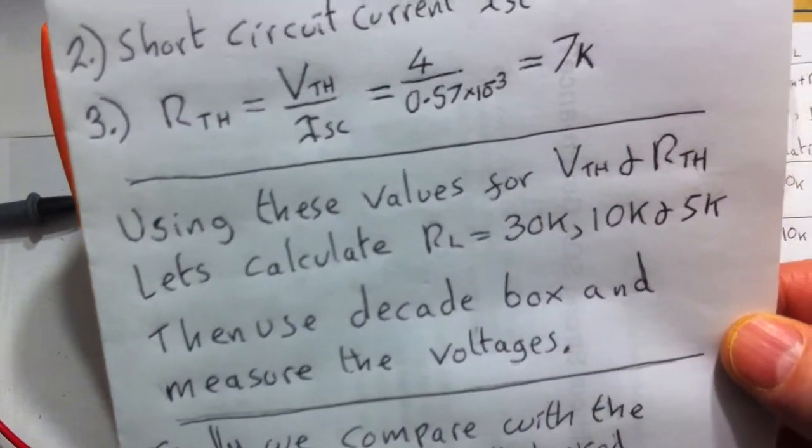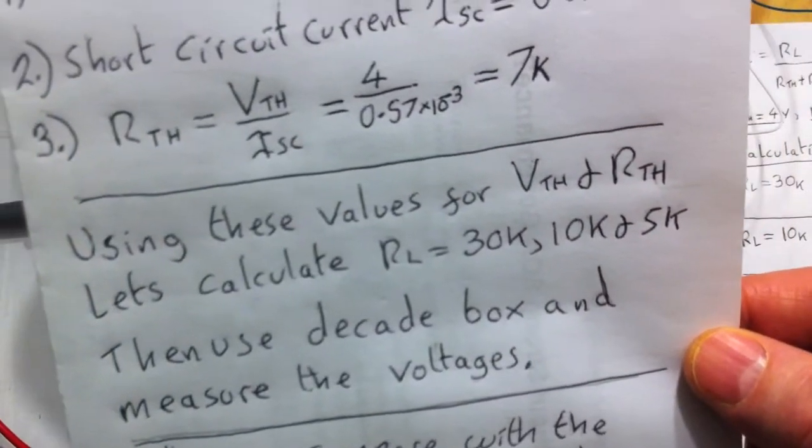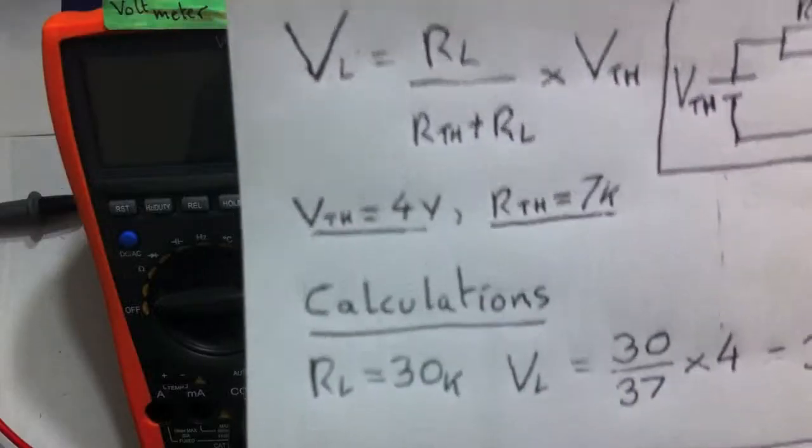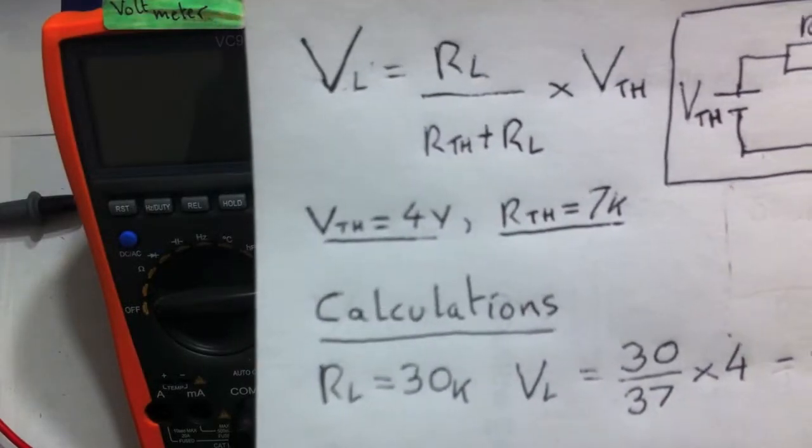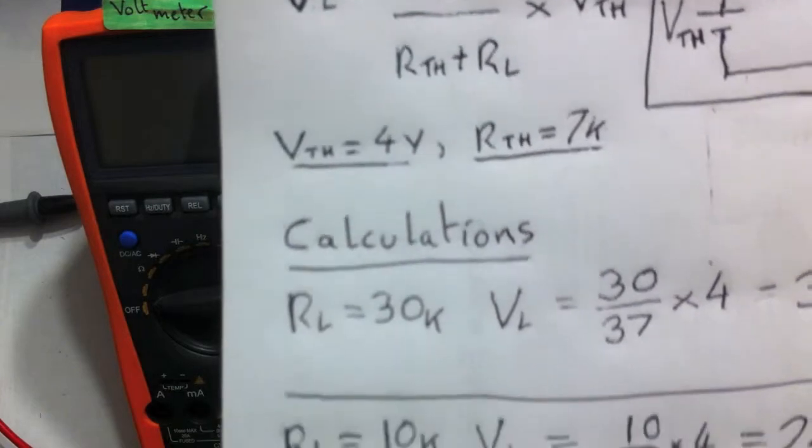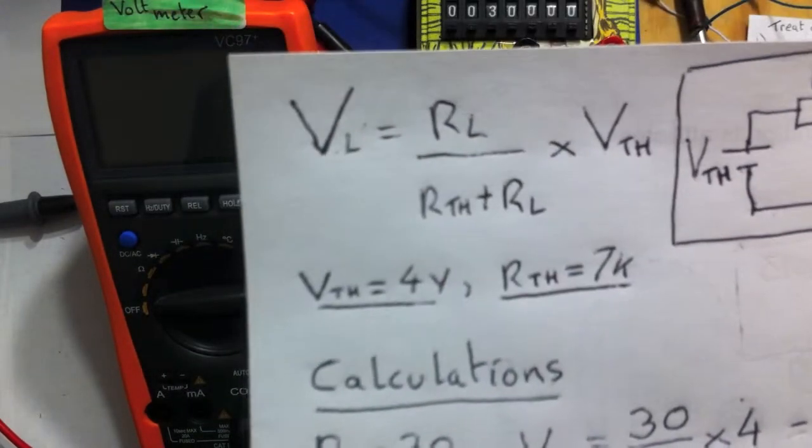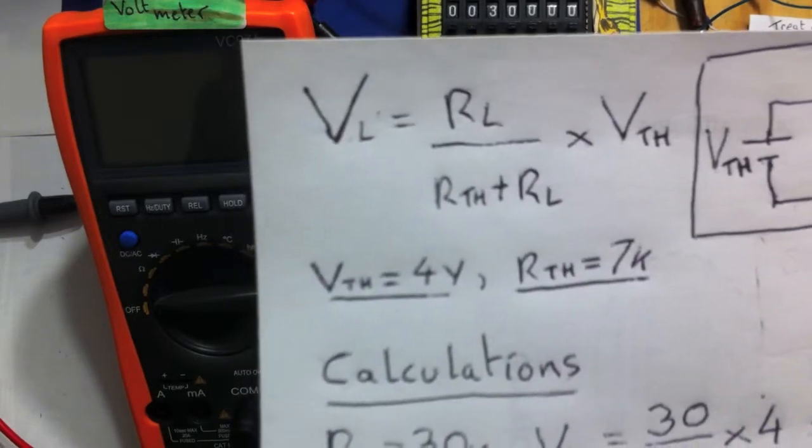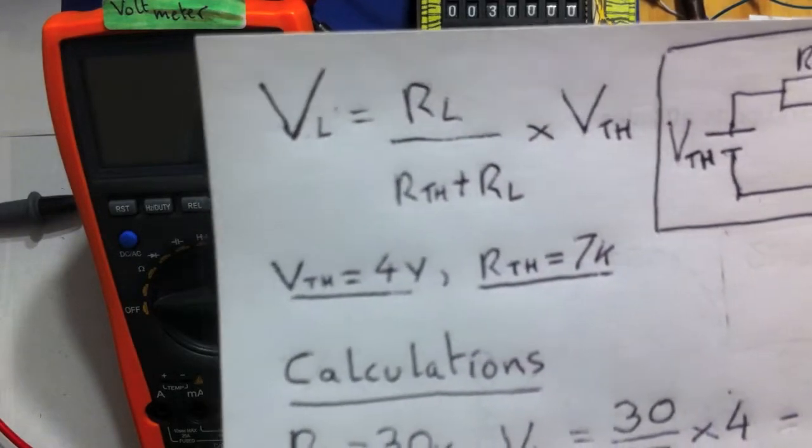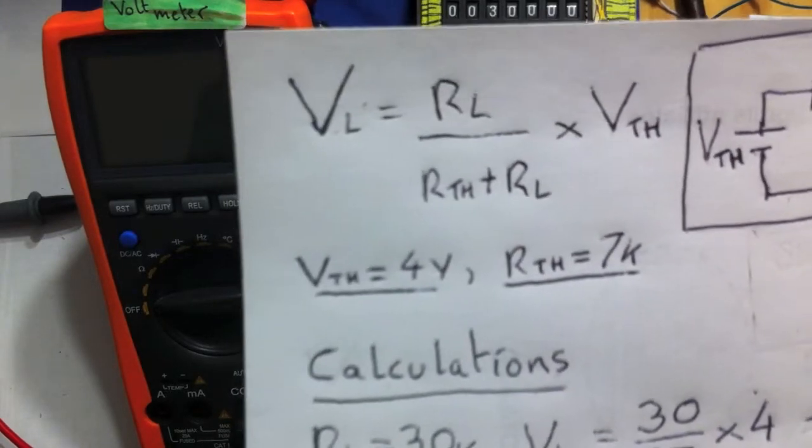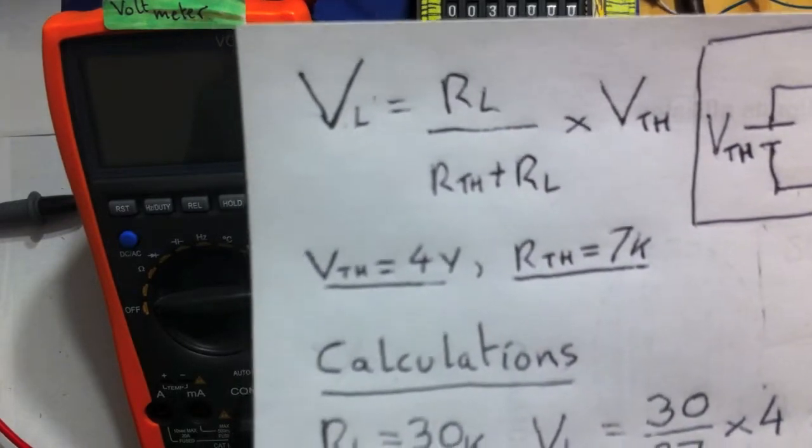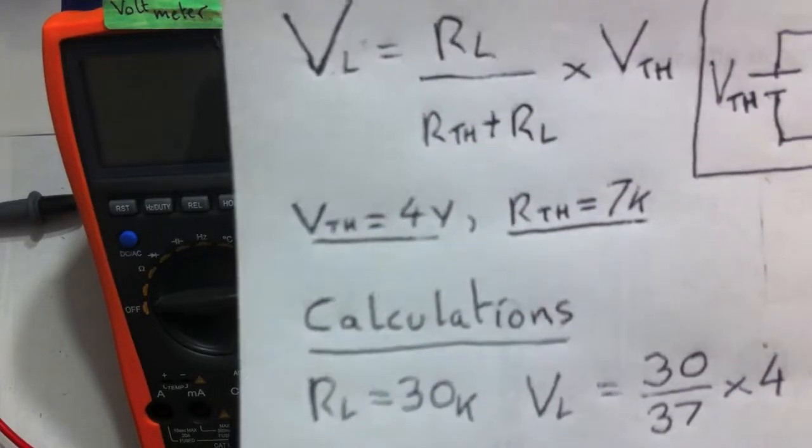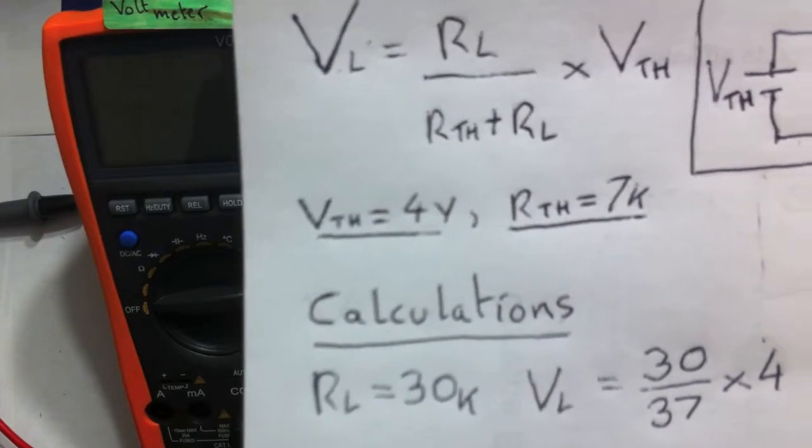Then we're going to measure the voltage this time. We're not going to measure the current, otherwise it'll take too long. Because we found 4 volts and Thevenin resistance of 7k, the easy calculation is just to use this for the voltage. So the voltage across the loads, we can do this quick calculation using the voltage divider formula.